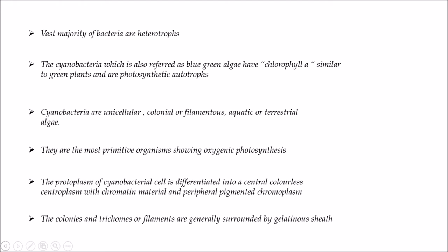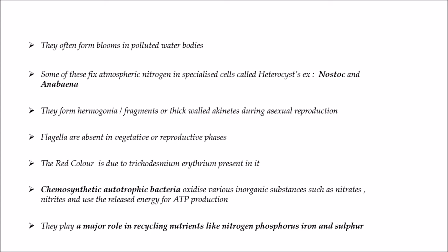The protoplasm of the cyanobacterial cell is differentiated into a central colorless centroplasm with chromatin material, and a peripheral pigmented chromoplasm. Colonies and trichomes or filaments are generally surrounded by gelatinous sheets. They often form blooms in polluted water bodies. Some fix atmospheric nitrogen in specialized cells called heterocysts — for example Nostoc and Anabaena.